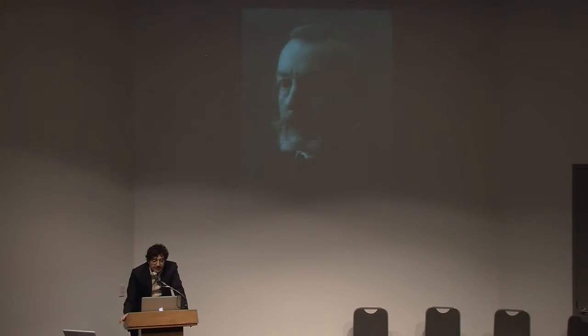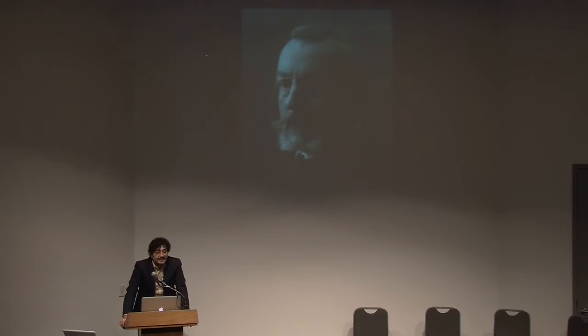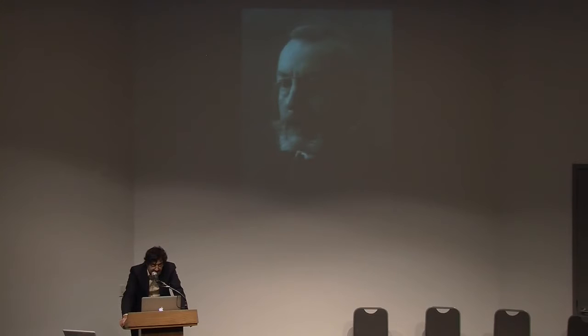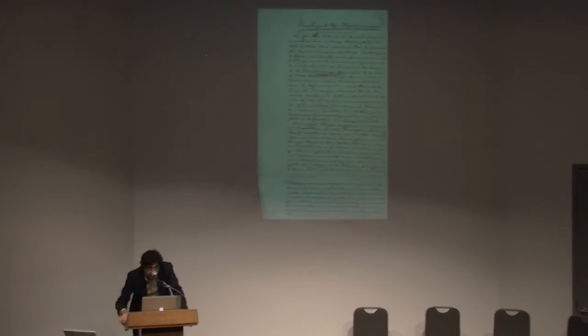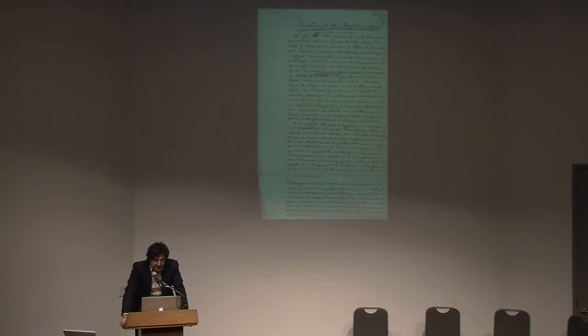Henri Pirenne, born 1862, died in 1935, is well known for his controversial book Mohammed and Charlemagne. This book was published after Pirenne's death in 1935 and appeared in English for the first time in 1954. It was already completed as a manuscript of circa 300 pages on May 4th, 1935 — the crowning achievement of his last years of work and the climax of many years of research, as his son Jacques Pirenne tells us in the introduction.